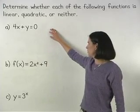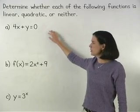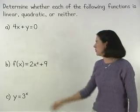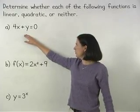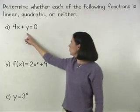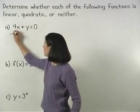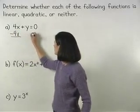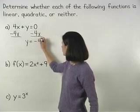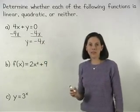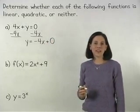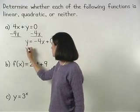Determine whether each of the following functions is linear, quadratic, or neither. In Part A, to determine whether the function 4x plus y equals 0 is linear, quadratic, or neither, let's set the function equal to y by subtracting 4x from both sides, to get y equals negative 4x, or y equals negative 4x plus 0.